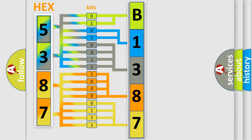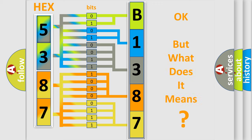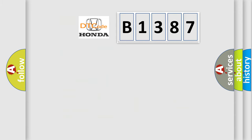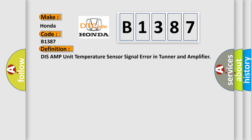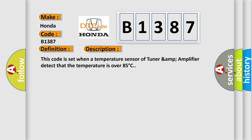We now know in what way the diagnostic tool translates the received information into a more comprehensible format. The number itself does not make sense to us if we cannot assign information about what it actually expresses. So, what does the diagnostic trouble code B1387 interpret specifically for Honda car manufacturers? The basic definition is: DIS AMP unit temperature sensor signal error in tuner and amplifier. This code is set when a temperature sensor of the tuner amp amplifier detects that the temperature is over 85 degrees Celsius.